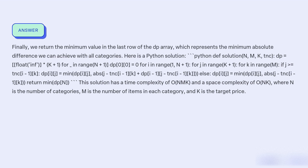Finally, we return the minimum value in the last row of the dp array, which represents the minimum absolute difference we can achieve with all categories. Here is a Python solution.